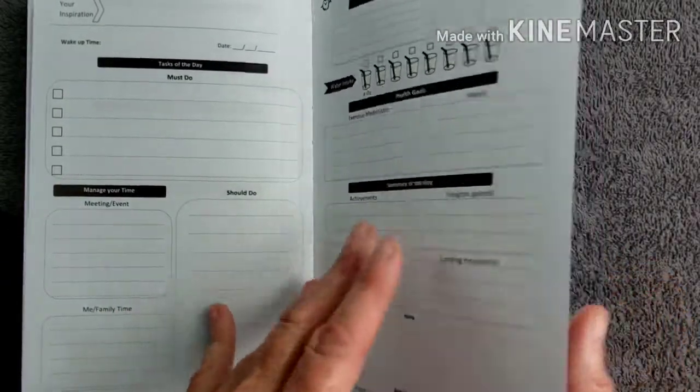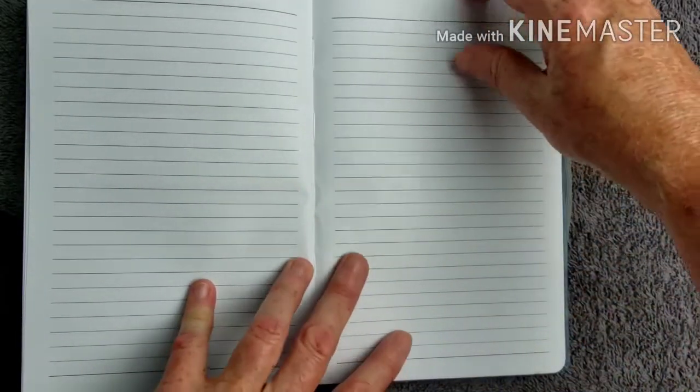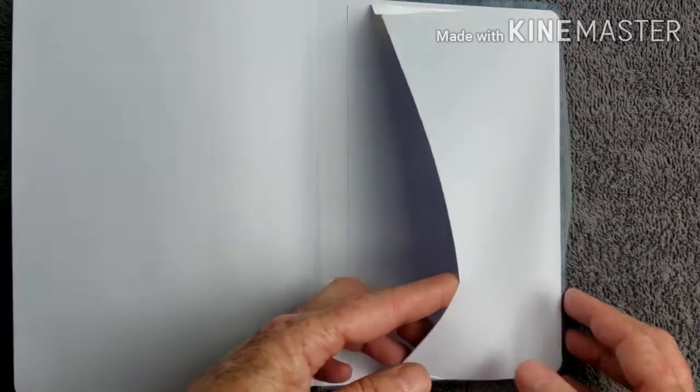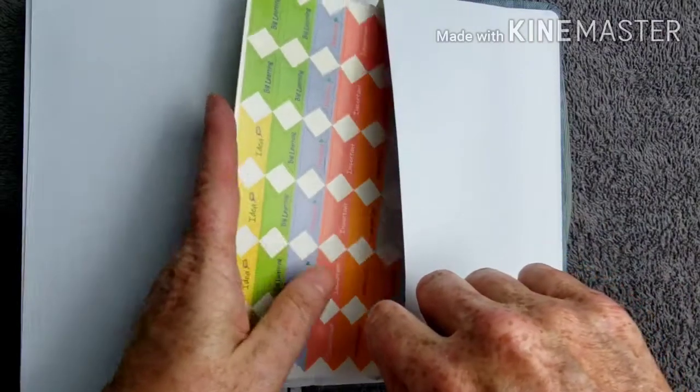So at the very end, it goes right into some note pages. So it has nine lined pages for notes. And then the last page is blank. And at the back, it has a nice pocket. So that's where you can keep your stickers.